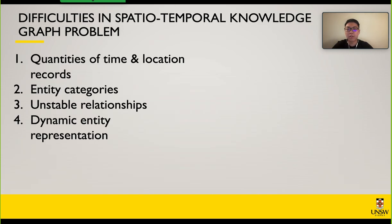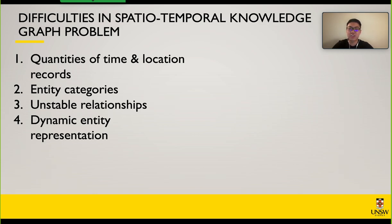The spatial-temporal knowledge graph uses a fixed rule to represent the dynamic nature of data, but it faces some difficulties. The first is the number of time points and locations. The second is how to divide entities into correct categories. And most importantly, entity relationships and attributes change over time or locations.